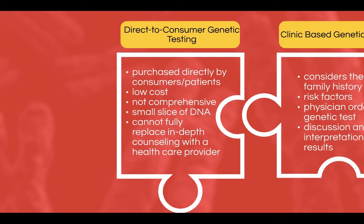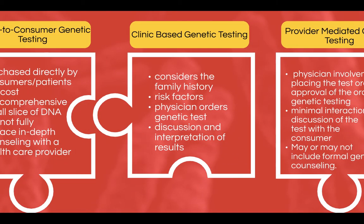Furthermore, DTCGT can be considered recreational genetic testing and allows patients to engage with results personally, which might be of interest to him. Clinic-based genetic testing takes into account the patient's personal and family history. This type of genetic testing may be billed through insurance but only when the doctor recommends it. The genetic test ordered comprehensively evaluates the DNA that might be responsible for a condition, and the results are confirmed within CAP and CLIA genetic testing laboratories. Results are interpreted within the context of the patient's personal and family health history, along with considerations of published literature and medical guidelines regarding the condition.